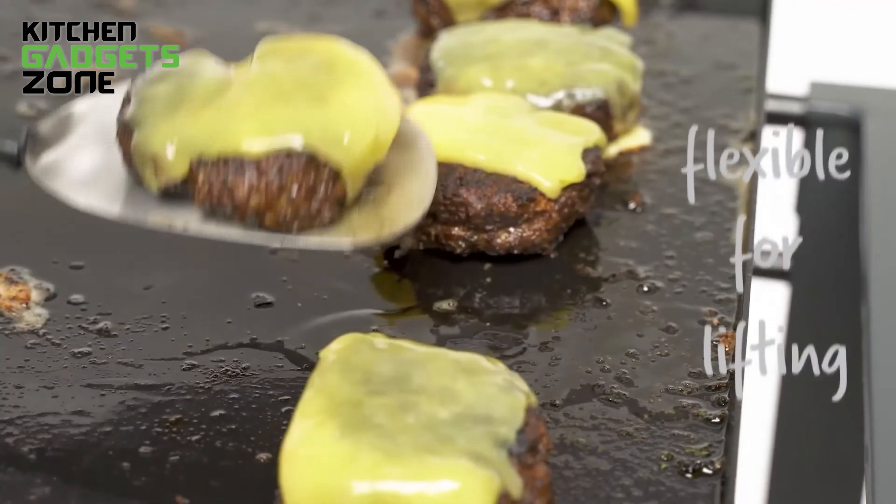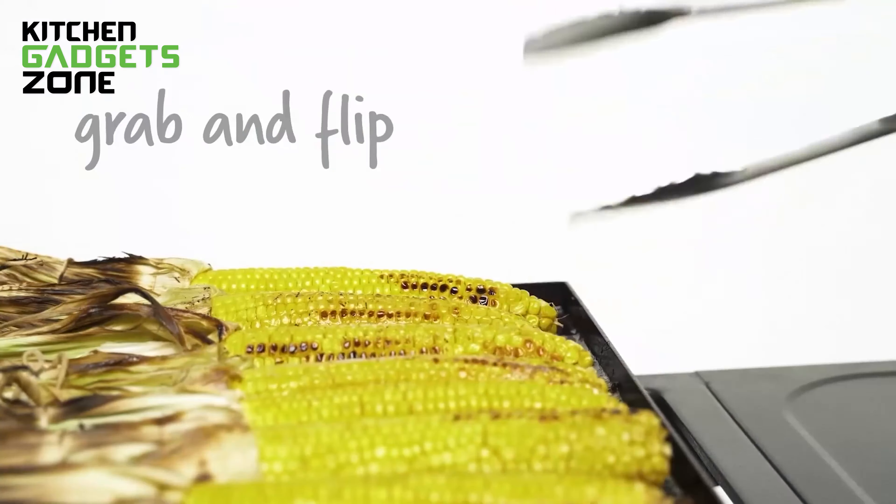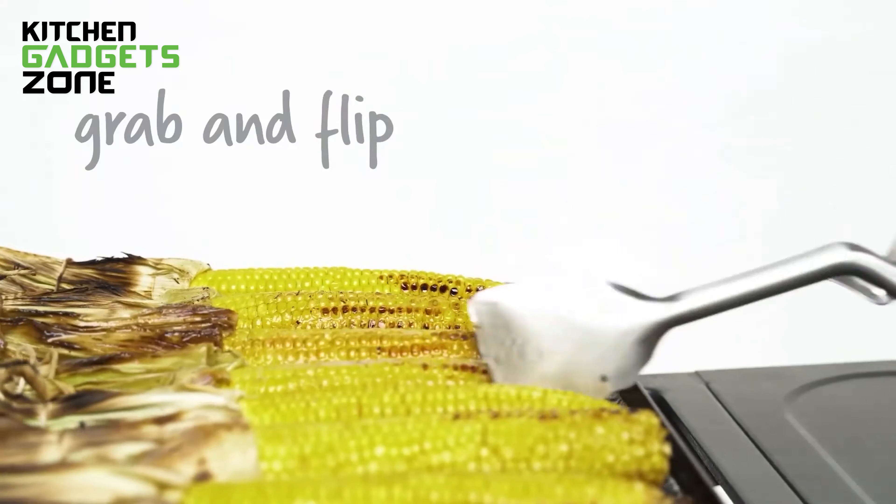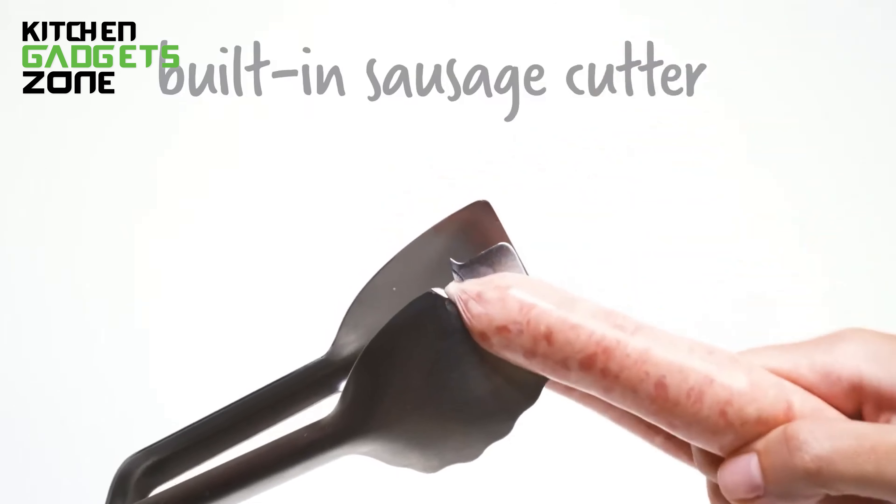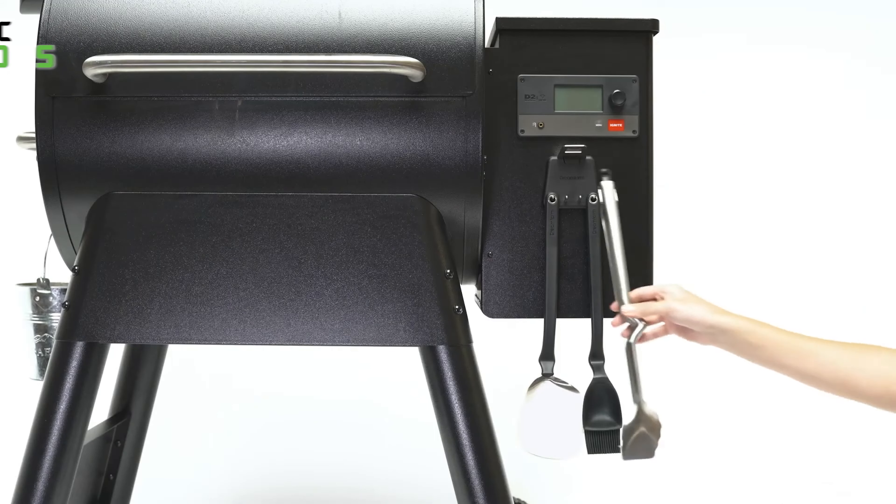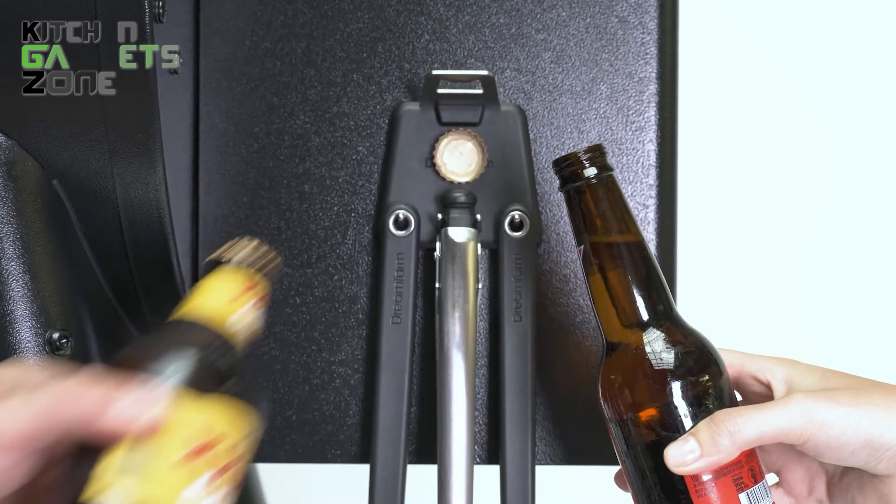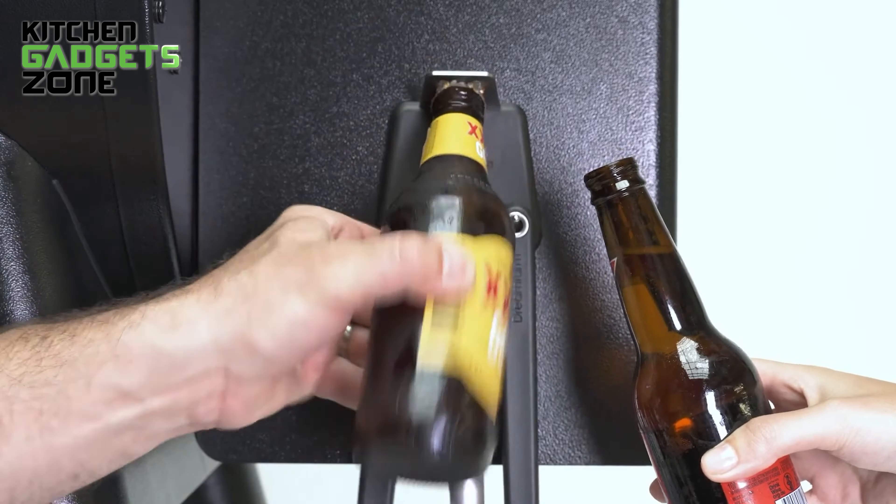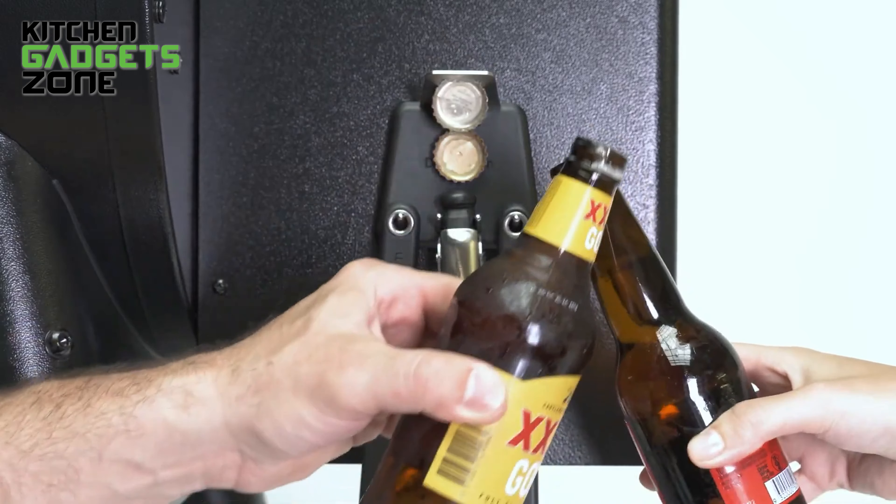The serrated chopula spatula is perfect for cutting and flipping, while the locking tongs open and close with the click of a button, and even have a handy prick for sausages. The built-in bottle opener on the tool holder features an additional strong magnet to catch bottle caps, so you can crack open a cold one while you grill.